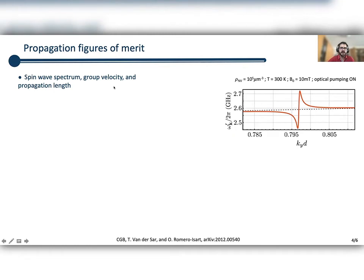Let me show you what we can do by looking at some propagation figures of merit. In particular, I'm going to show you three properties of the spin waves: one will be the spin wave spectrum, that is the dispersion relation; the second will be the group velocity; and the third will be the propagation length.